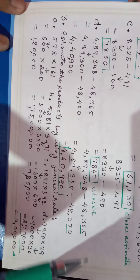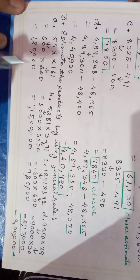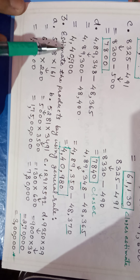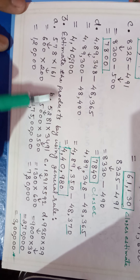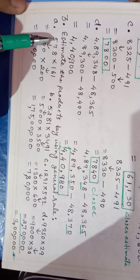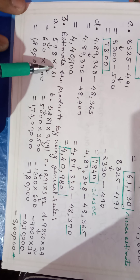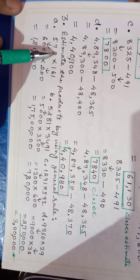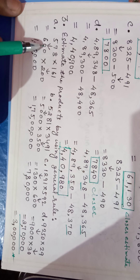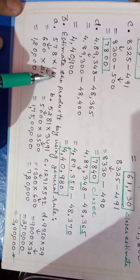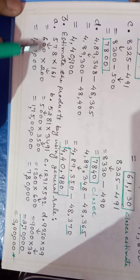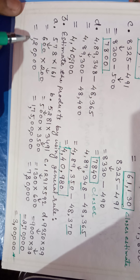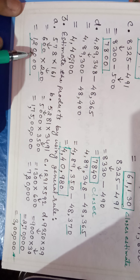To the nearest 10 gives a closer estimate than to the nearest 100. Now, estimate the products using the general rule. Question number 3: 578 into 161. 578 is nearer to 600 to the nearest 100, and 161 is rounded as 200. So 600 into 200 means 6 times 2 equals 12, followed by four zeros, giving 1,20,000. This is the answer.